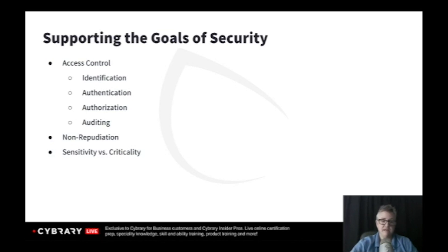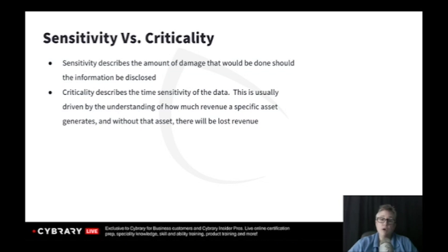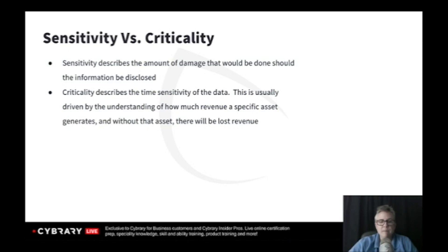The last thing in this section is sensitivity versus criticality. Sensitivity is tied to privacy and confidentiality — what we want to keep private. We want to prevent unauthorized disclosure. Sensitive data includes personally identifiable information, personal healthcare information, personal financial information, confidential data, top secret information. That's sensitive material — preventing unauthorized disclosure.